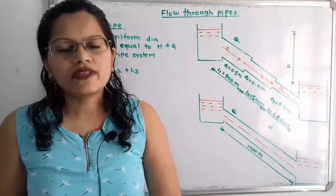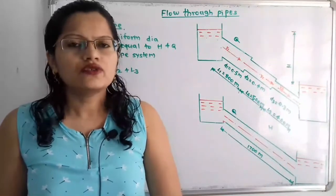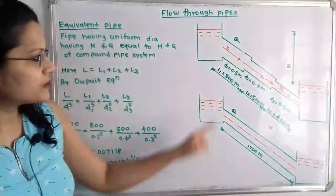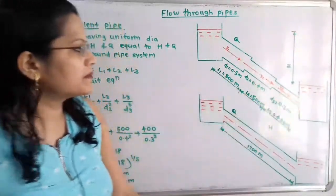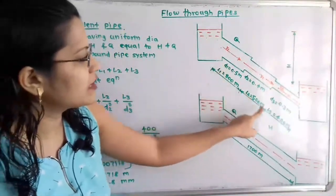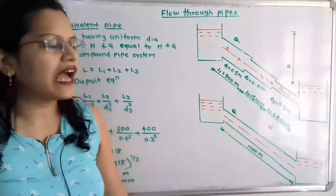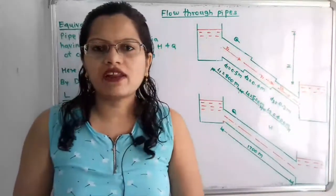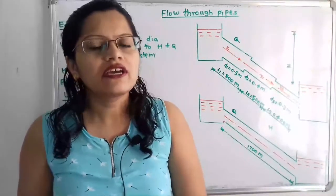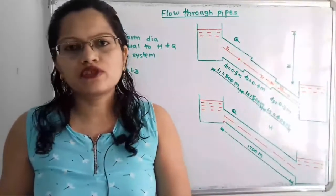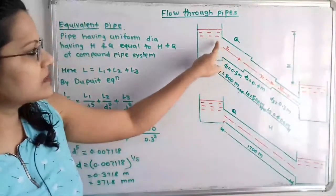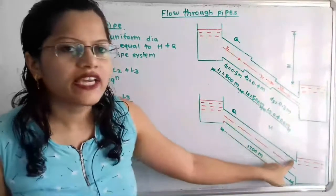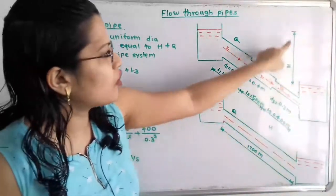A compound pipe system has different lengths and different diameters. We will understand this concept with the help of a diagram. Here is the compound pipe system having different lengths l1, l2, l3 with different diameters d1, d2, and d3. Now we have to provide the equivalent pipe. The condition is that its diameter should be uniform, and the discharge in this pipe system remains the same through the equivalent pipe.